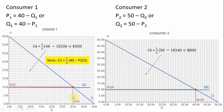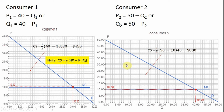Consumer one would buy 30 units, and then the firm would charge an access fee equal to consumer surplus, which is this triangle given by one-half base times height. Consumer surplus can be thought of as one-half times (40 minus P), whatever the price is, times Q — the number of units that the consumer buys. You can do a similar thing for consumer two.